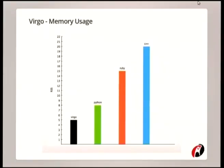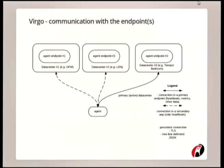Here's an example response from the server. Here's a graph which shows memory usage of agents written in different programming languages — there's an agent written in C++, Ruby, and so on — and our Virgo only uses around five megabytes of memory. We could go even lower, but we wanted to make the agent cross-platform and portable, so we decided to statically link all the libraries, which increases memory usage a bit — especially because we link against libOpenSSL, which is known to take a lot of memory.